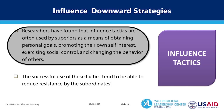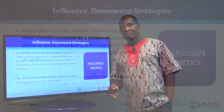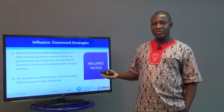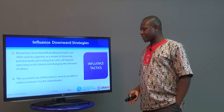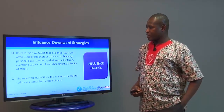Why do superiors influence those below? Sometimes for personal goals that have nothing to do with the organization. Because they are at the top, they use influencing tactics to achieve that — sometimes out of self-interest, sometimes as a way of social control, and sometimes as a way of positively trying to change behavior. At the family level, that is what parents do to ensure social control, that you live according to the standards of society.